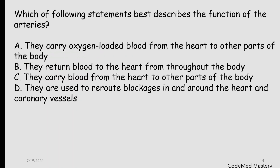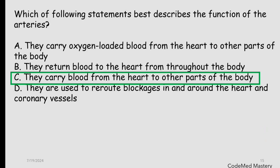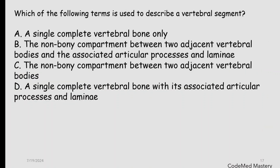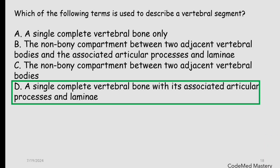The right answer is option C — they carry blood from the heart to other parts of the body — because arteries are tube-like blood vessels that carry blood away from the heart to the body cells. Next question: which of the following terms is used to describe a vertebral segment? Read the options. The right answer for this question is option D.